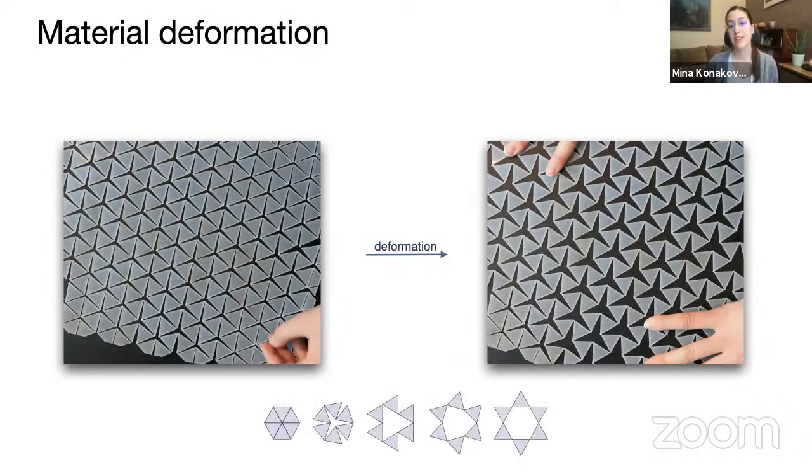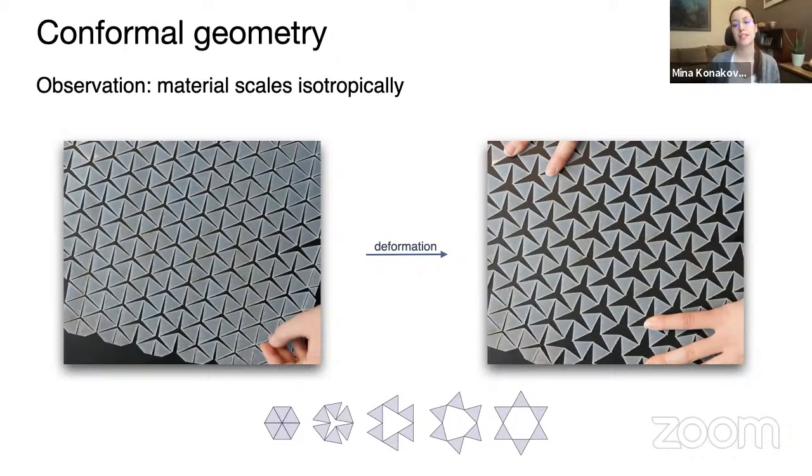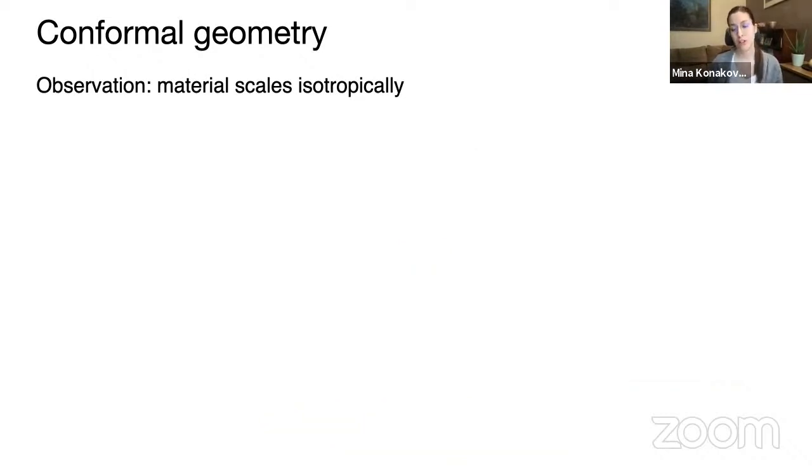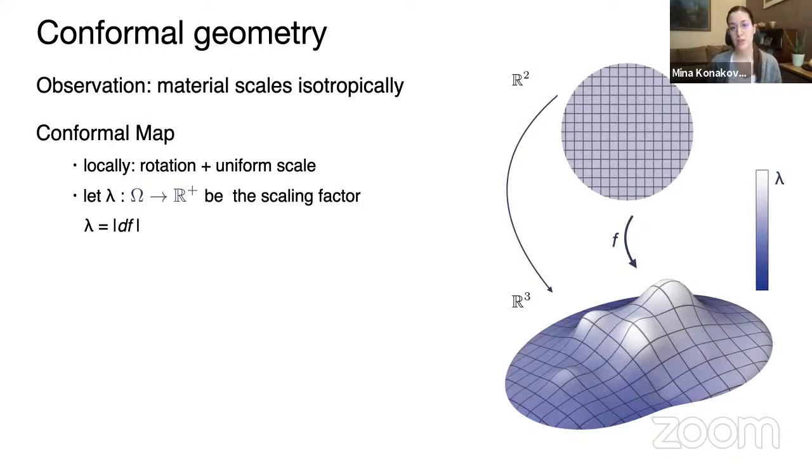we noticed that we can abstract this pattern in the form of a kinematic linkage called Kagome lattice that is composed of equilateral triangles. And what we noticed is that the material scales approximately isotropically. And this observation immediately provided a direct link to conformal geometry. And just to give you a brief overview of what conformal geometry is, it's a transformation that allows local rotation and uniform scaling, but not shearing. In other words, conformal mapping preserves angles, but not lengths. And we can characterize a conformal map with a local scaling factor. For example, in this transformation on the right, you can see that the mapped squares from 2D to 3D preserve their 90 degree angles everywhere. Just the edge lengths have scaled across the surface.